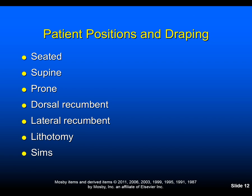The dorsal recumbent position can be used for examination of genital or rectal areas; the patient lies supine with knees bent and flat on the table. We place the drape in a diamond position from chest to toes and wrap each leg with the corresponding lateral corner of the diamond. The lateral recumbent is a side-lying position with legs extended or flexed; the left lateral recumbent may be used in listening to heart sounds with the patient's left side down. The lithotomy position is generally used for a pelvic exam — begin with the patient in dorsal recumbent, help stabilize her feet in the stirrups, and slide her bottom to the edge of the table, draping in the diamond position.